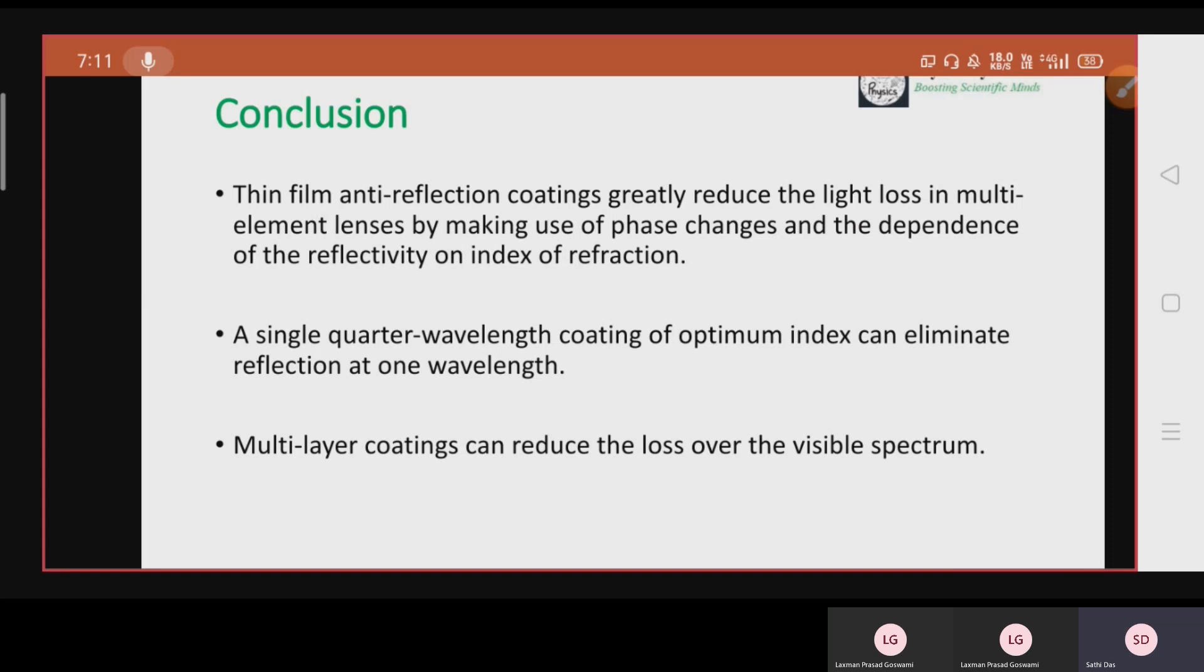Multi layer coating will reduce the reflection for the entire visible spectrum. One will be for some layer, another for another spectrum, for another light frequency or another wavelength. It will use another layer. That's how multi layer work.